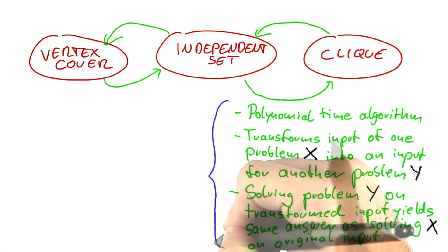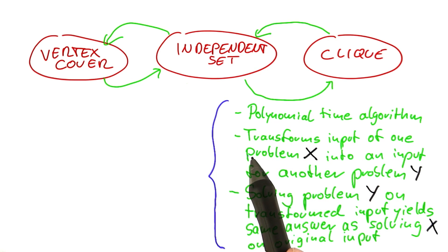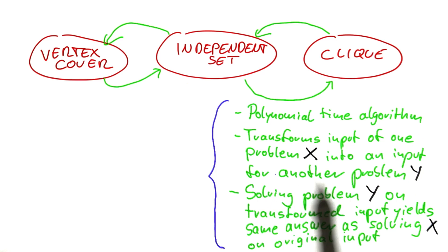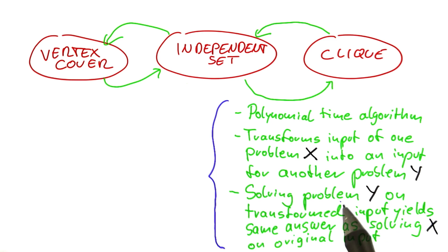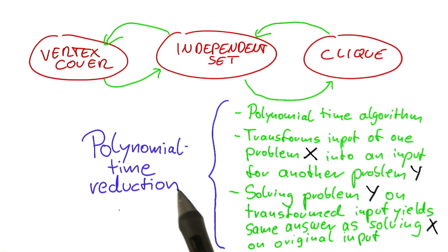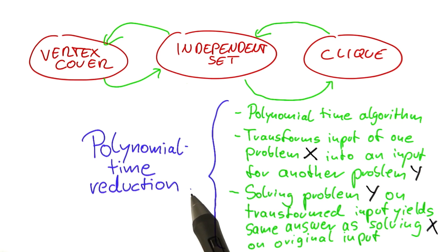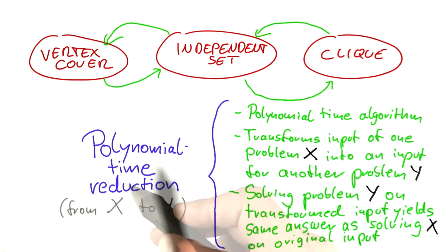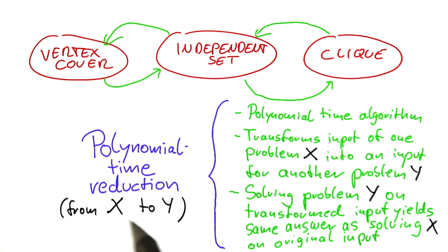This concept of taking an input and transforming it in polynomial time into a new input for another problem, so that you get the same solution, is known as a polynomial time reduction. If you want to be precise about what you're applying this reduction to, you can say that you have a polynomial time reduction from x to y.